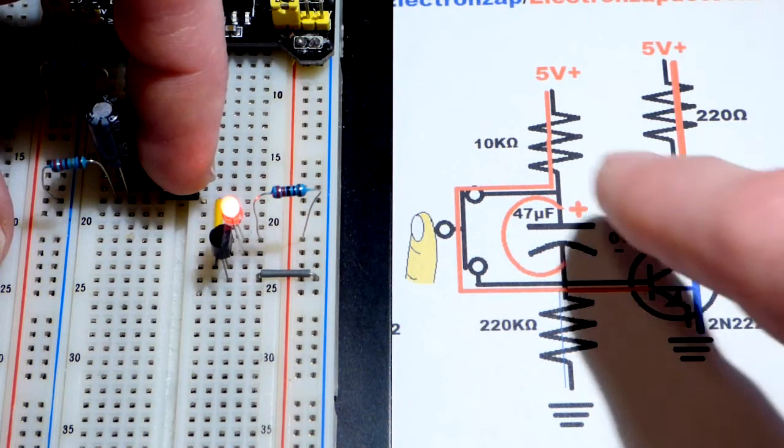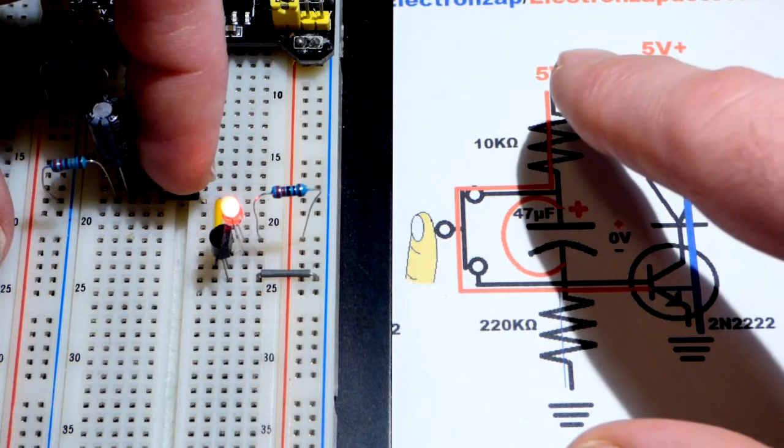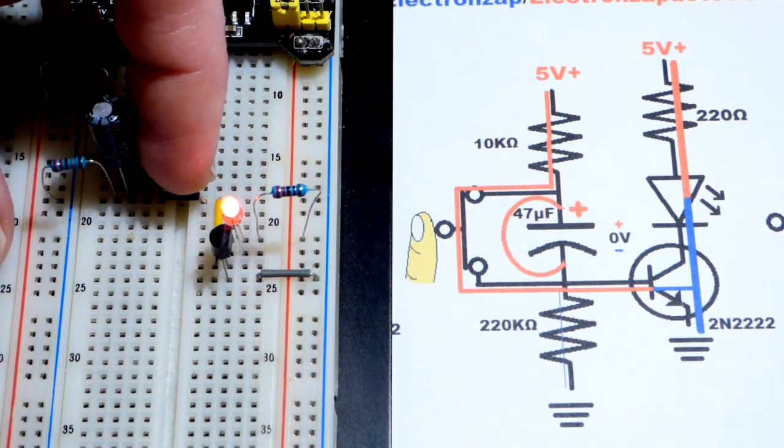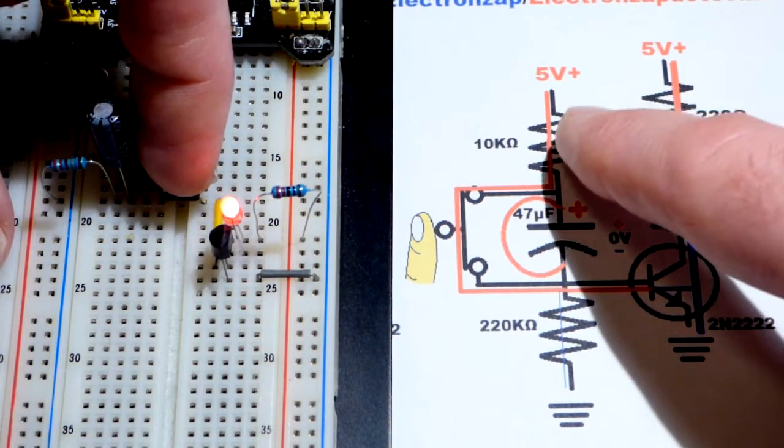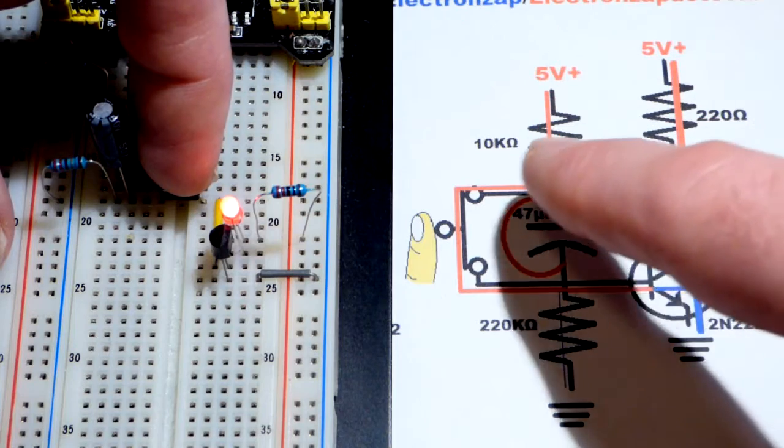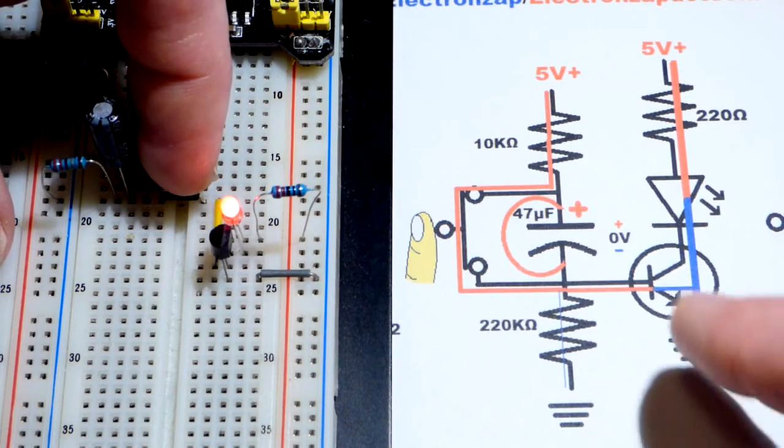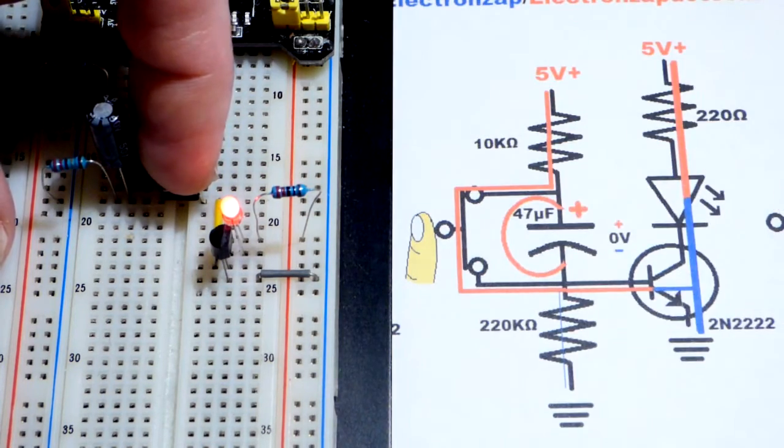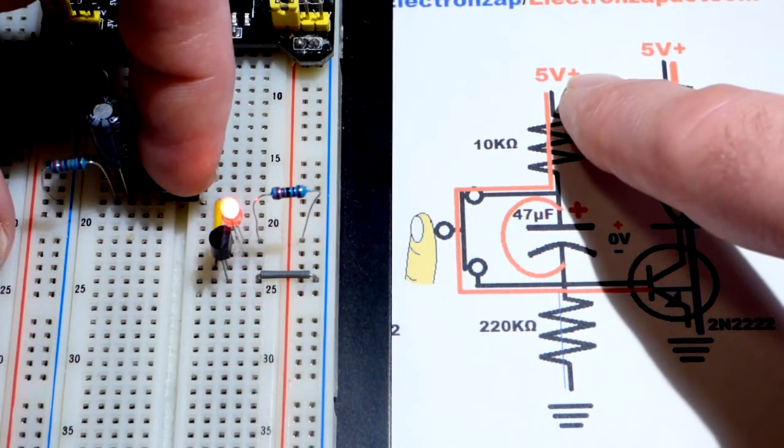So let's follow the path from positive to negative. That's what you think of when you think of conventional current, the way they used to think electricity works. Now they know that electrons actually flow from negative to positive.